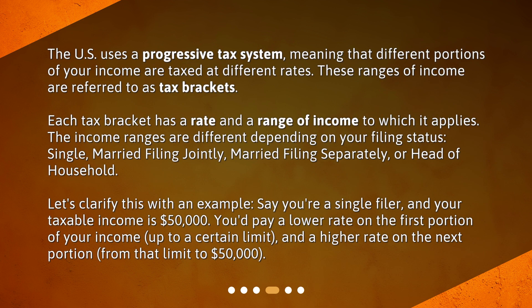The U.S. uses a progressive tax system, meaning that different portions of your income are taxed at different rates. These ranges of income are referred to as tax brackets. Each tax bracket has a rate and a range of income to which it applies. The income ranges differ depending on your filing status — single, married filing jointly, married filing separately, or head of household. For example, if you're a single filer with a taxable income of $50,000, you'd pay a lower rate on the first portion of your income up to a certain limit, and a higher rate on the next portion from that limit to $50,000.